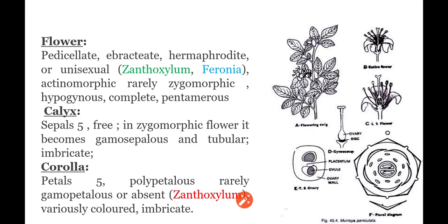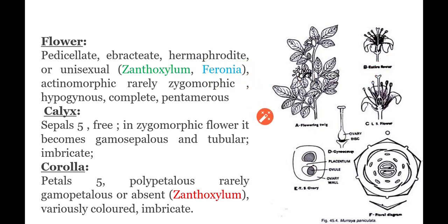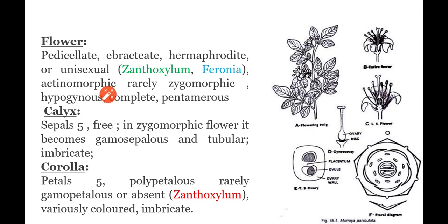Coming to the flower: flowers are pedicillate — pedicel is present, they are not sessile. Next, they are ebracteate — bract is absent. Flowers are hermaphrodite, meaning bisexual: both androecium and gynoecium are present in the same flower. Unisexual flowers are also present in Xanthoxylum and Ferronia; unisexual flowers contain only androecium or gynoecium.